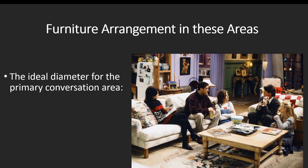Let's talk about furniture arrangement within these areas. I'm going to ask you about square footage and certain measurements — these are numbers you want to know and memorize, so write them down. This is asking what the ideal minimum diameter for a primary conversation area is — how big does this space need to be? The answer is 8 to 12 feet.